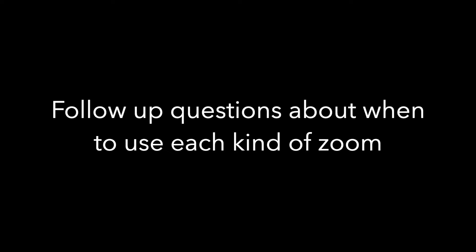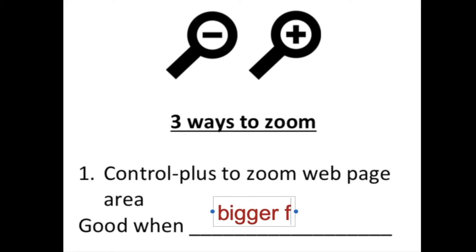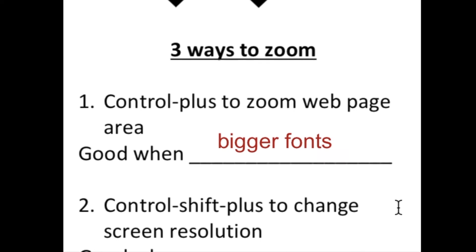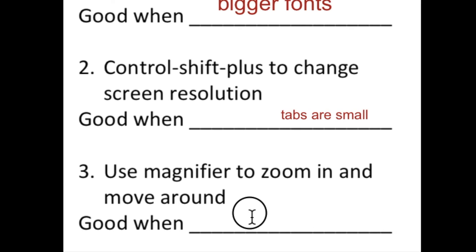Afterwards we asked follow-up questions about when to use each kind of zoom. For the Control plus zoom — zooming in on a web page area only — she thought using that would be good when the print is too small and you could have bigger fonts. For Control Shift plus to change the screen resolution, she thought that would be good when the tabs were too small. And for the magnifier, to zoom in and move around, she thought using that when you wanted to zoom in on web page details would be good.